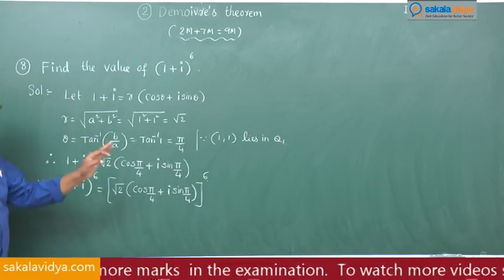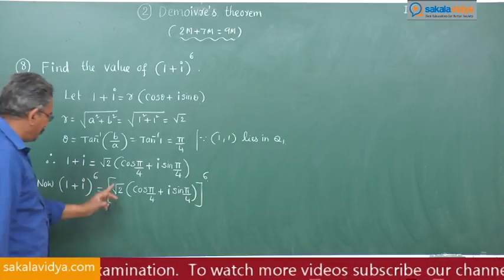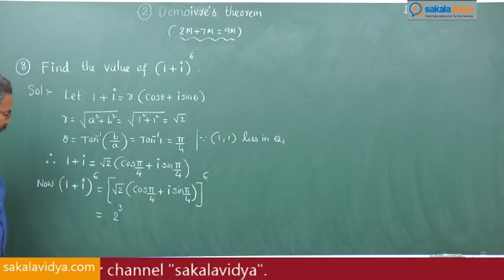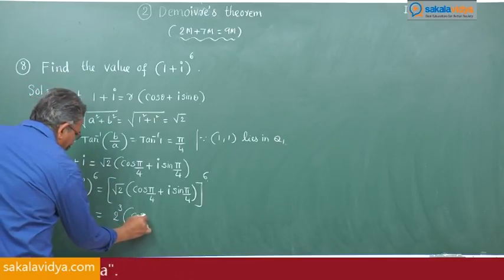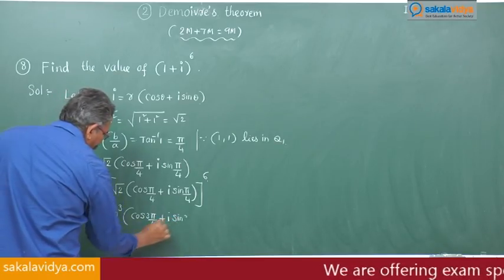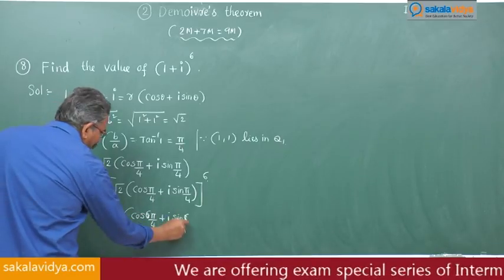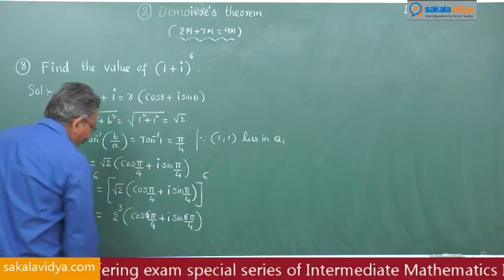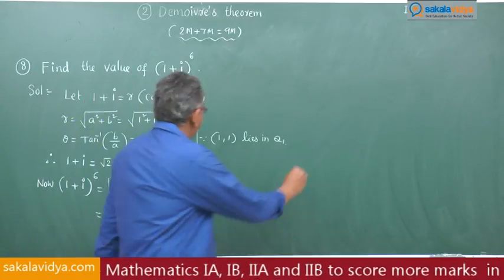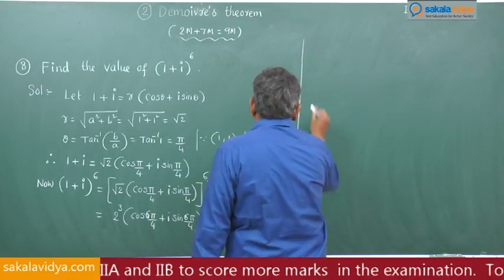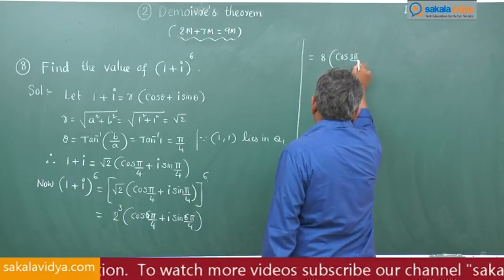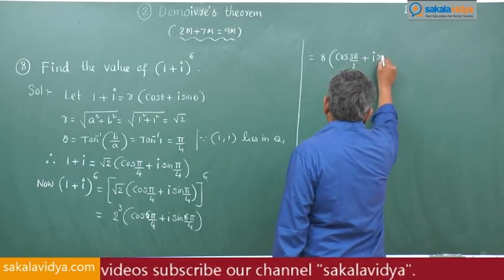(√2)^6 means (2^(1/2))^6 = 2^3 = 8. We apply De Moivre's theorem to get 8 [cos(6π/4) + i sin(6π/4)]. Simplifying 6π/4 gives 3π/2, so this equals 8 [cos(3π/2) + i sin(3π/2)].